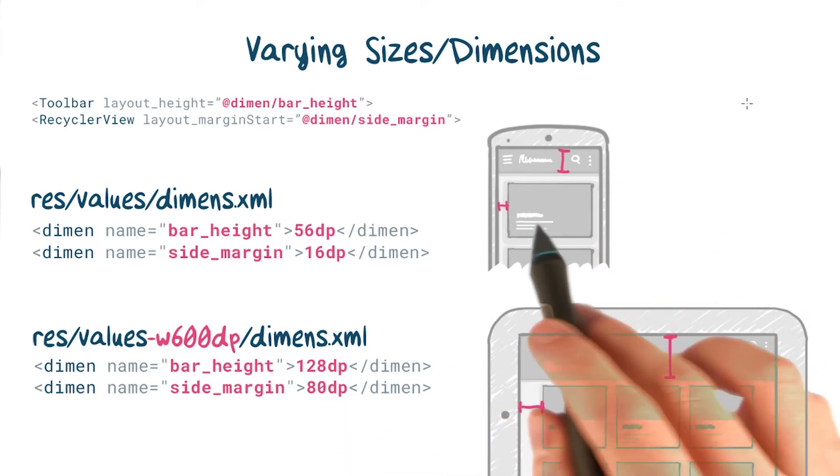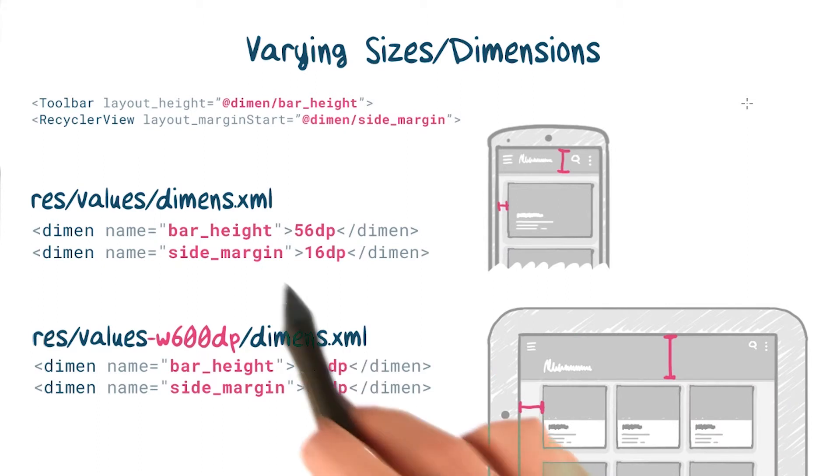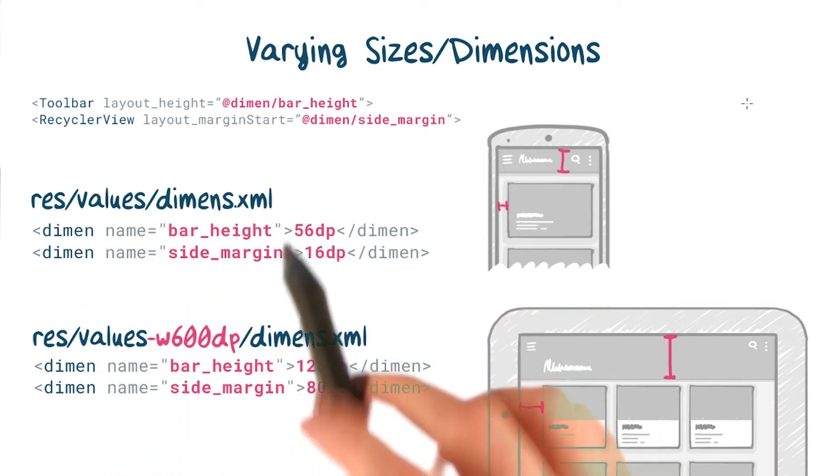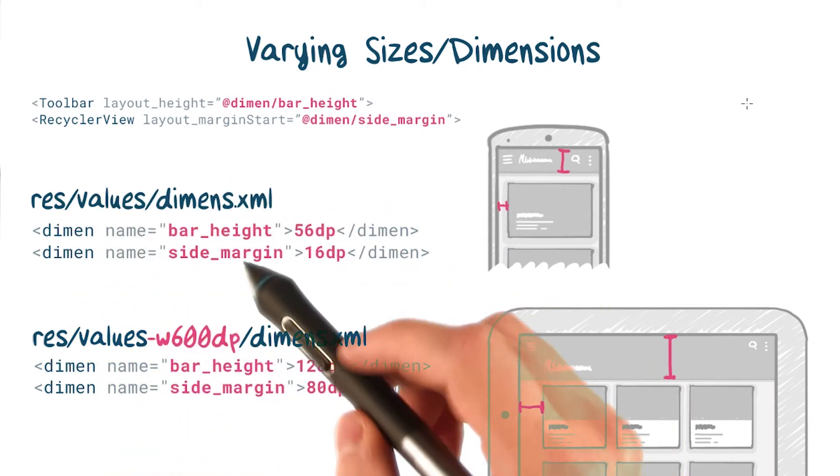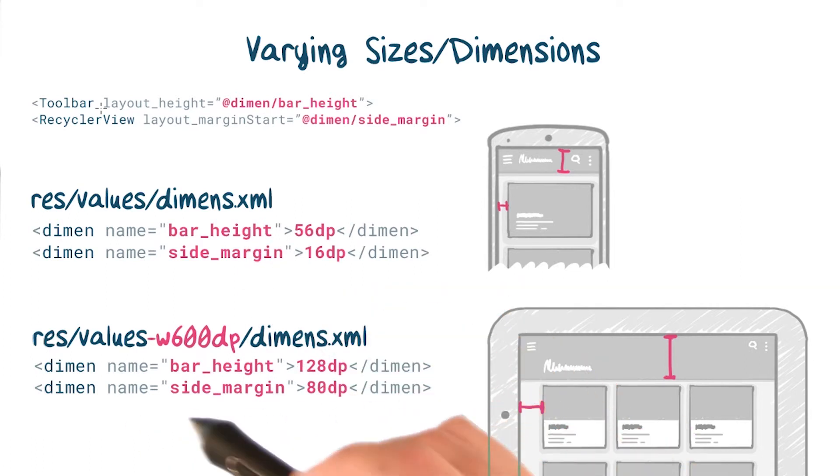Here's our same UI, but this time we're defining the toolbar and content view once, and specifying heights and margins that change on a 600DP wide screen. This technique is really powerful and lets you minimize code duplication quite a bit.